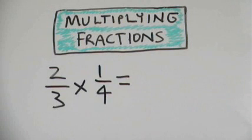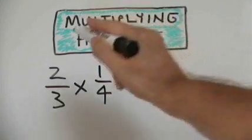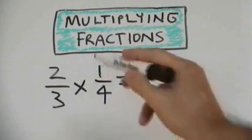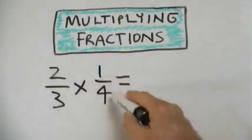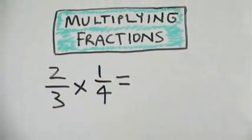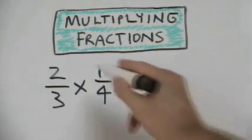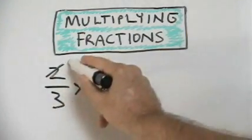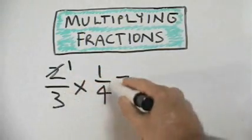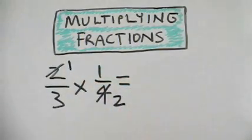We can simplify the process of multiplying fractions by using cross-cancelling. If we look at our fractions here, we can see that two goes into four. So we could use cross-cancelling to make the numbers smaller. Two would go into itself once. Two would go into four twice.